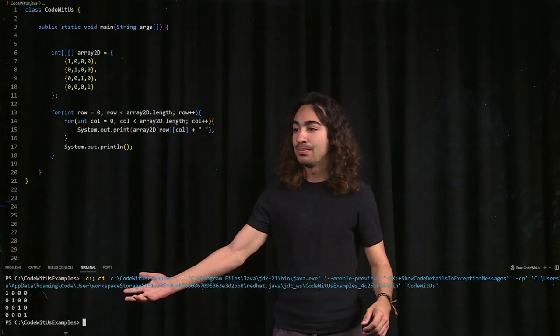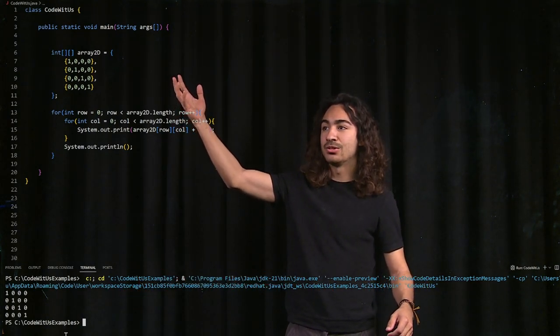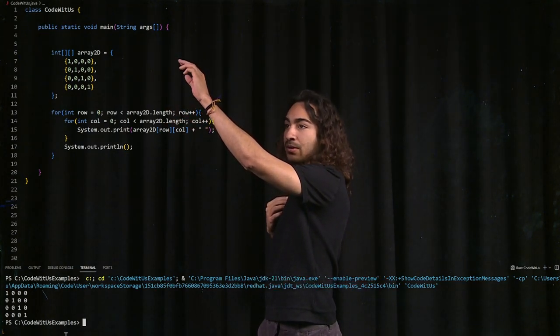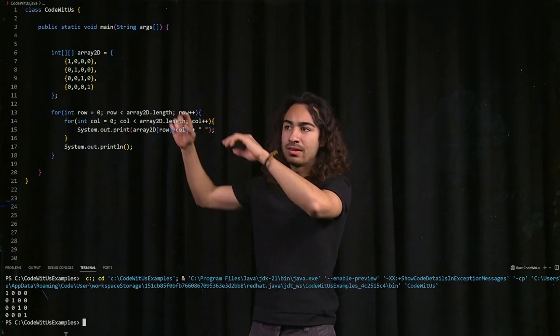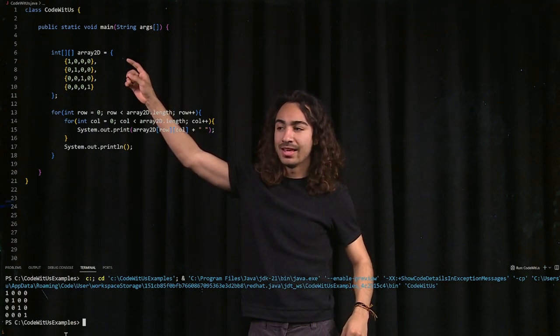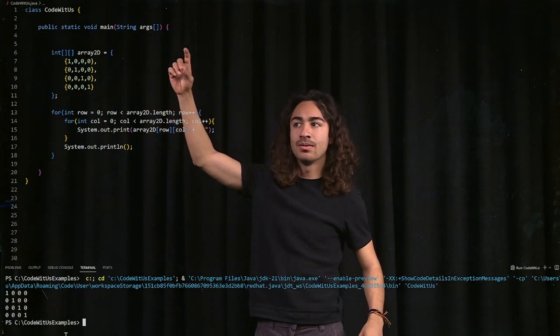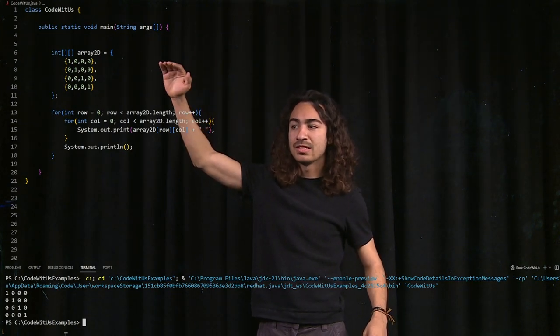As you can see, it prints out exactly what we have in our two-dimensional array. So, we went from the first array at the 0th index. We went through the leftmost column, 1. We printed that out. Then we went to the next column, 0, next, 0, next, 0. We finished that one.